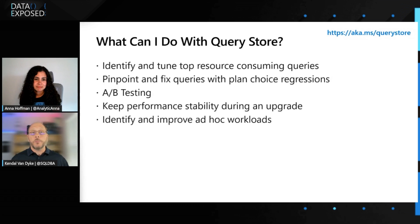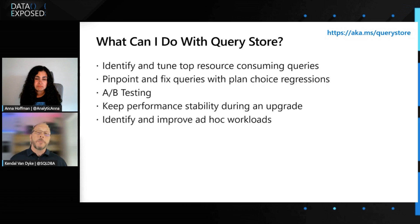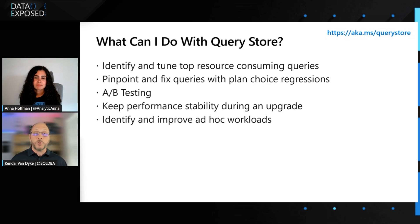It helps during upgrades when you're changing the compatibility level and you want to make sure that your queries perform consistently. You can use a feature in Query Store called plan forcing that allows you to fix a plan so that you can troubleshoot and figure out what's going on if it's got a regression issue after your upgrade. And finally, you can use Query Store to help improve ad hoc workloads. If most of your workload is ad hoc, it'll show up in your top resource consuming queries as a bunch of single execution queries, and you can help figure out what queries maybe need to be parameterized, or turn on optimized for ad hoc workloads, or forced parameterization, or some combination thereof.